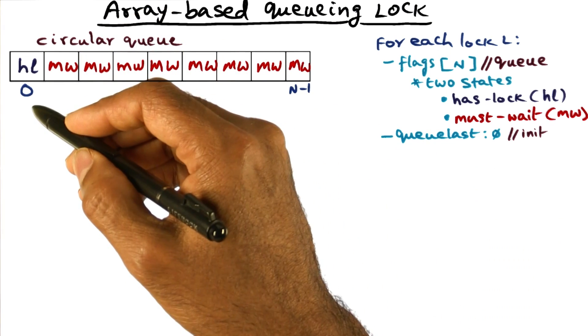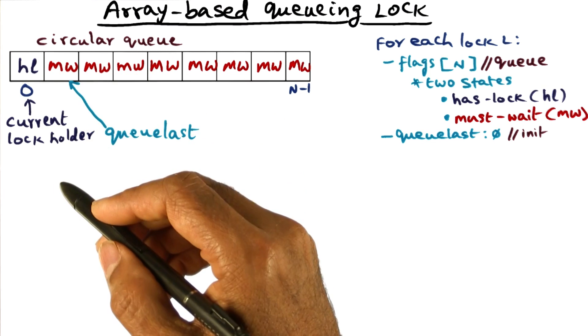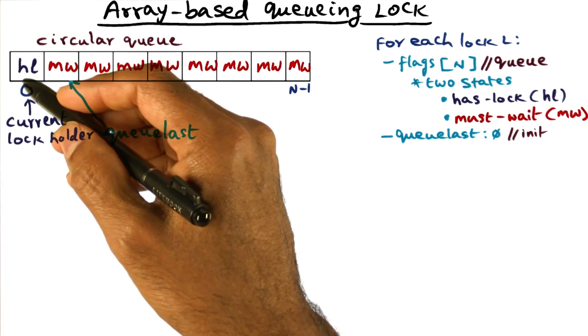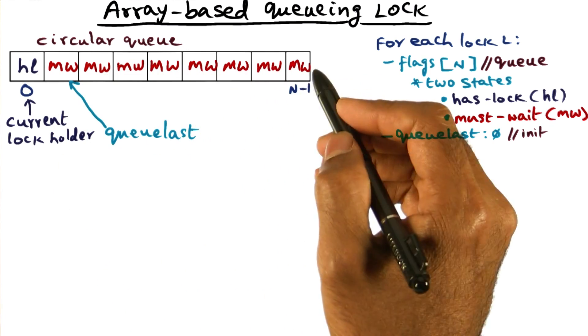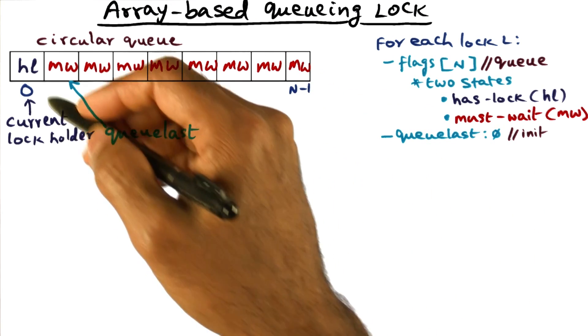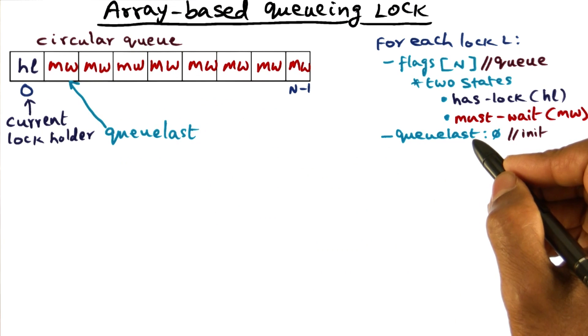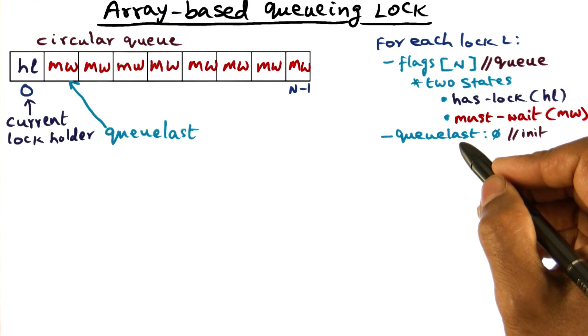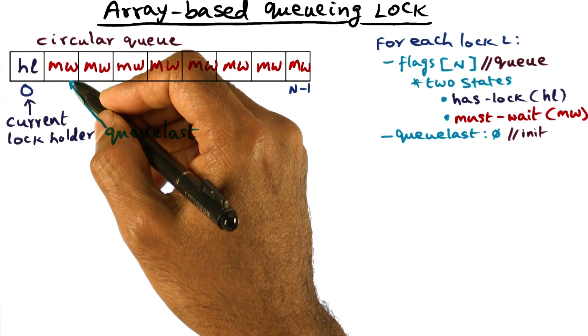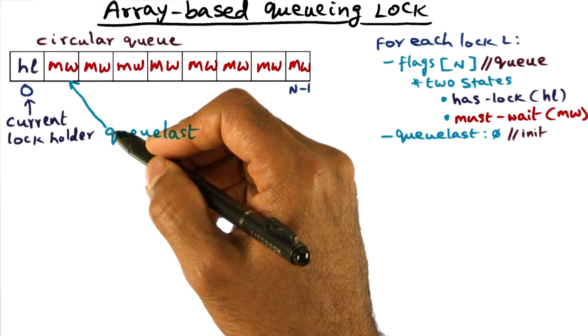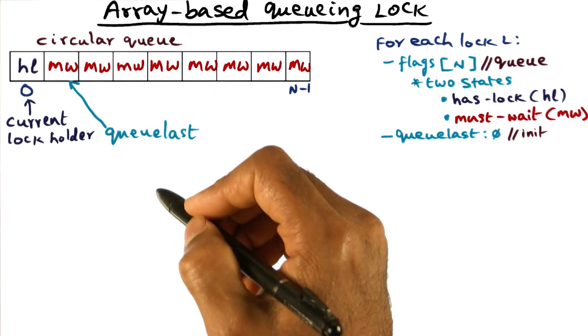So let's say some processor came along and made a lock request. It's going to get it immediately because there's no lock request currently pending. And so it's got this position, and he's got the lock, and what will happen is that the queue last variable will advance to the next part to indicate that future requesters have to start queuing up from here.